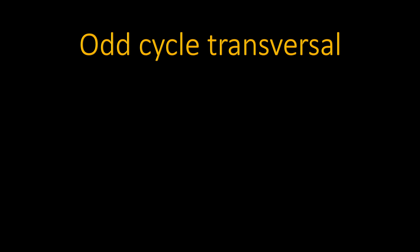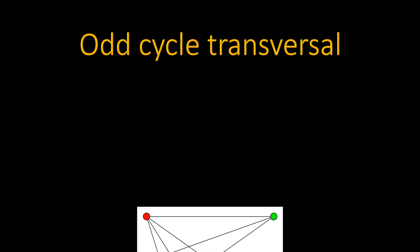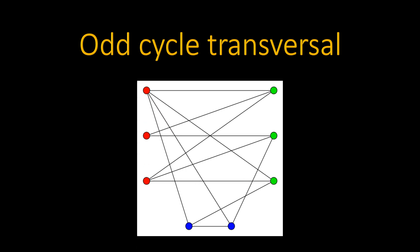The next is odd cycle traversal, which finds the minimum number of vertices to be removed in order to make the graph Bipartite. In this graph, if we remove the blue vertices, then the graph becomes a Bipartite Graph. It is a NP-complete problem and we won't be discussing its algorithm for now.